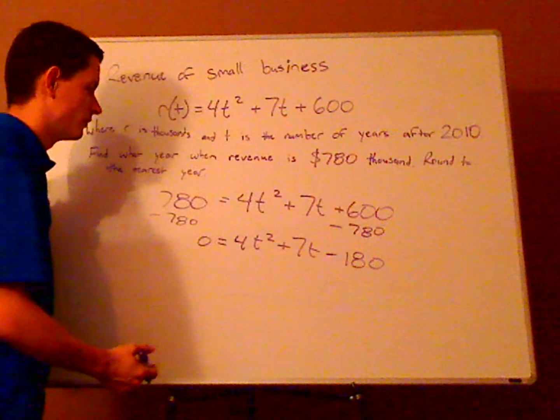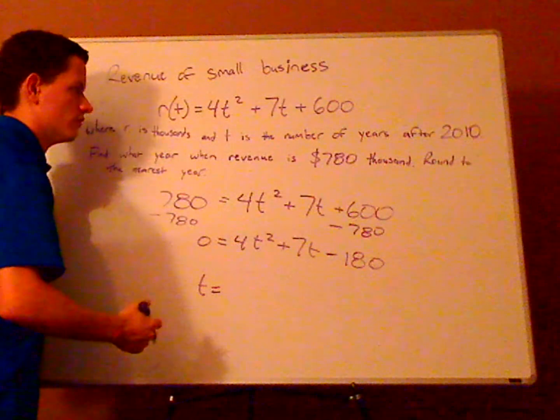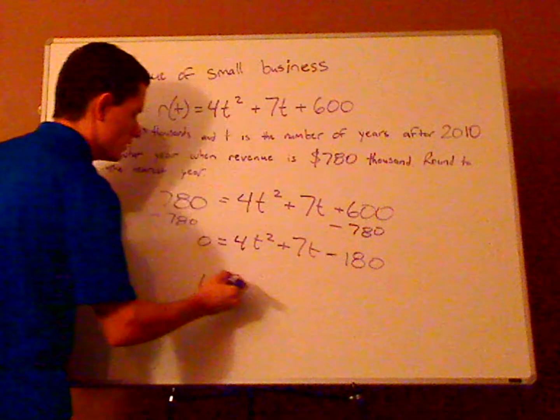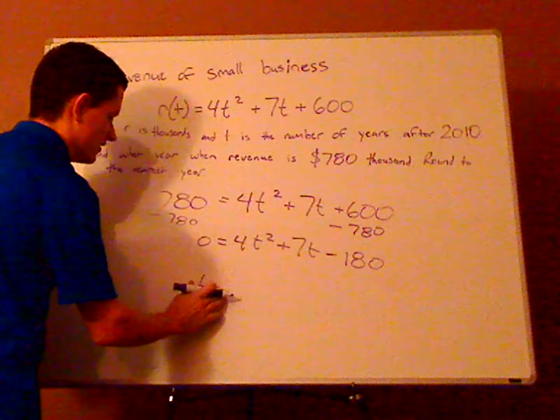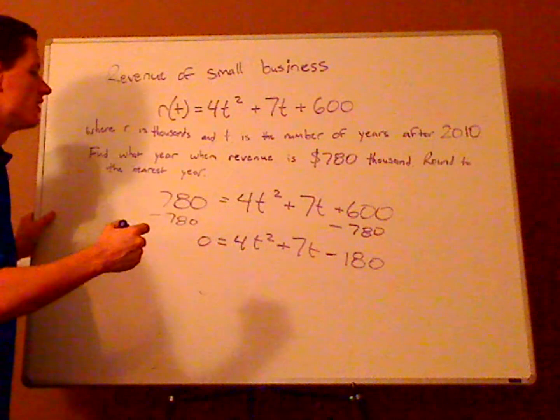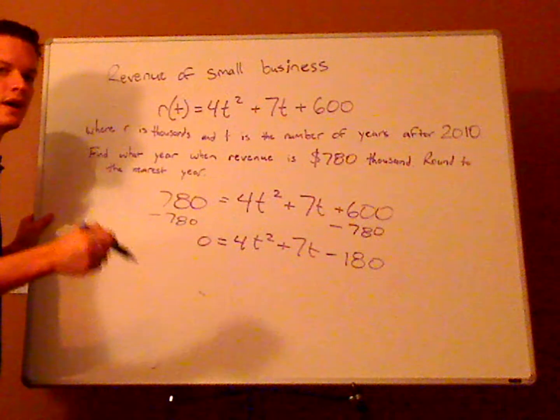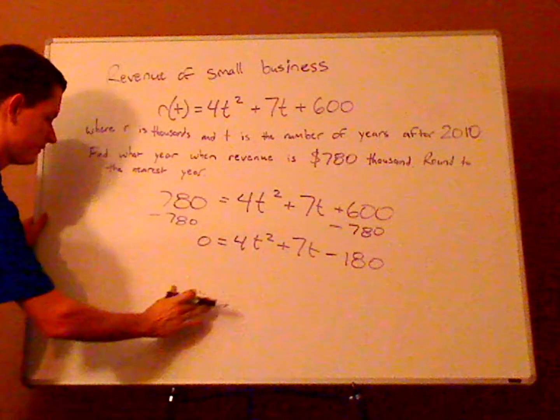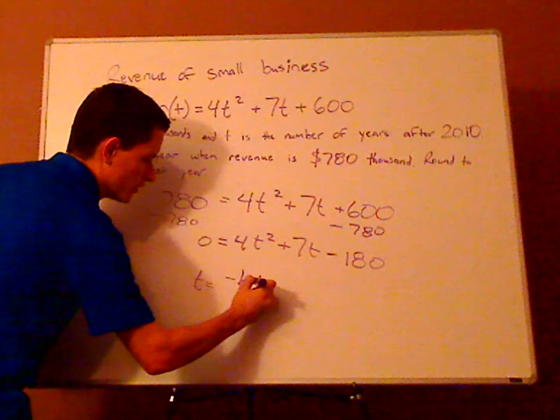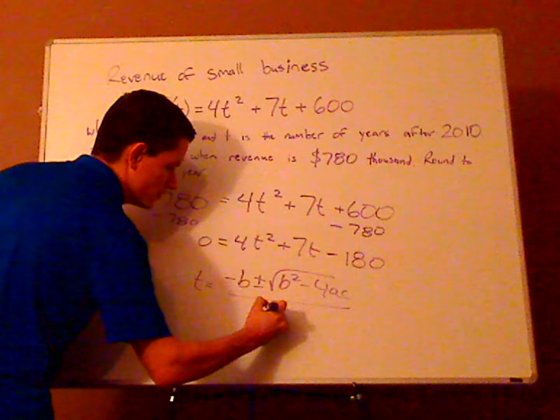Now use the quadratic formula. x equals negative b plus or minus the square root of b² - 4ac, all over 2a. So that is, t equals negative b plus or minus the square root of b² - 4ac, all over 2a.